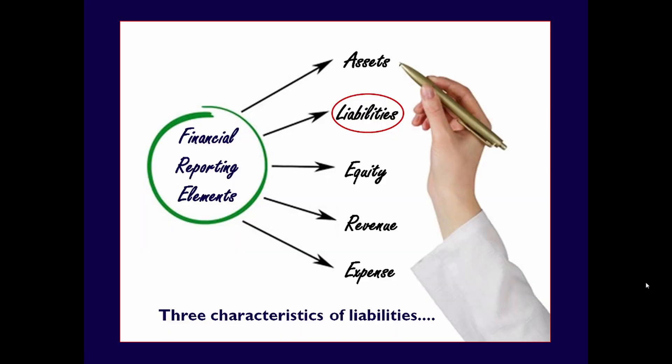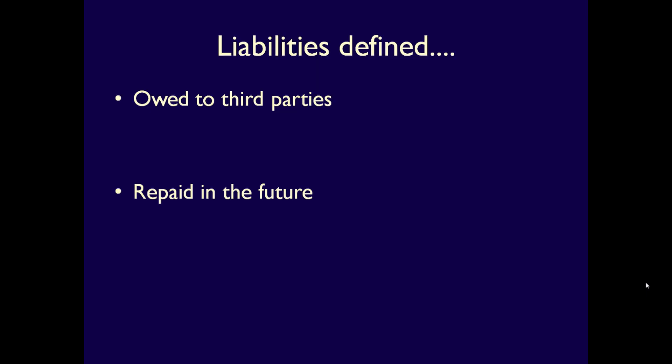How do companies get their assets? They often use liabilities — the next element of financial reporting — taking on debt in order to increase their assets. Liabilities also have three characteristics: liabilities are owed to third parties, they will be settled in the future, and they are due to past events. First, liabilities are owed — an obligation or debt — and importantly, they are owed to third parties, individuals or groups who are outside of the business.